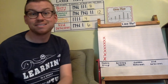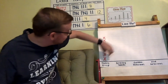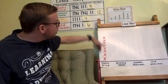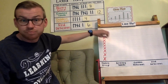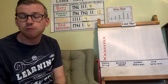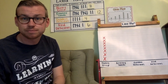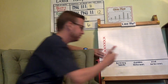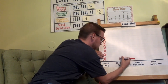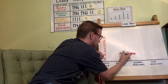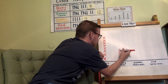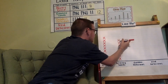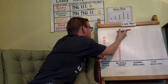This looks similar to a bar graph because the data is going up, but it's not quite a bar graph — there are no numbers on the side and these are X's, not a solid bar. How many am I going to put above Granny Smith? Twelve X's. One, two, three, four, five, six, seven, eight, nine, ten, eleven, twelve.